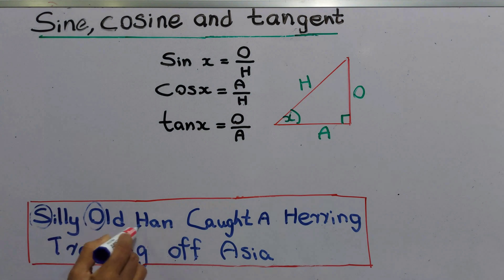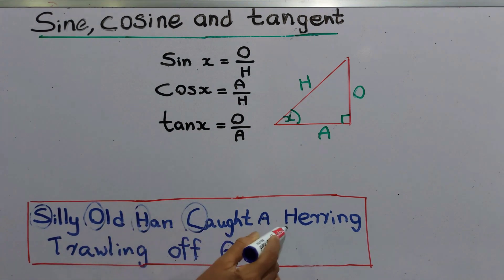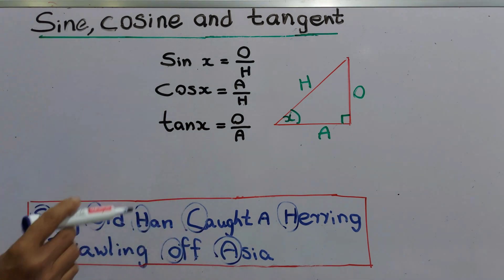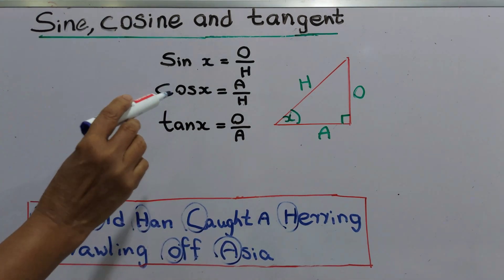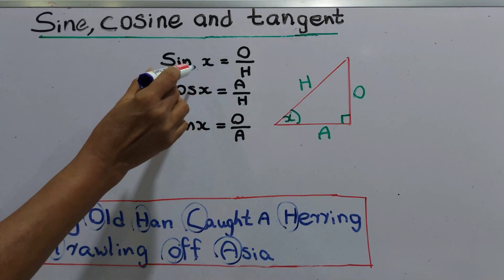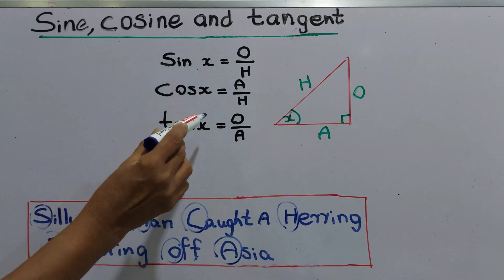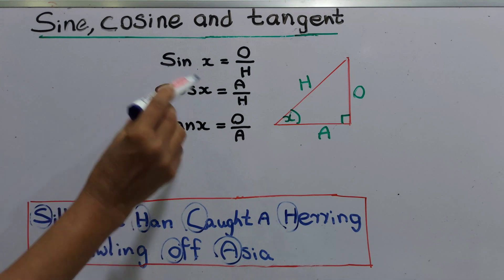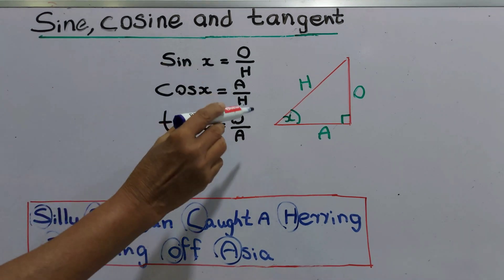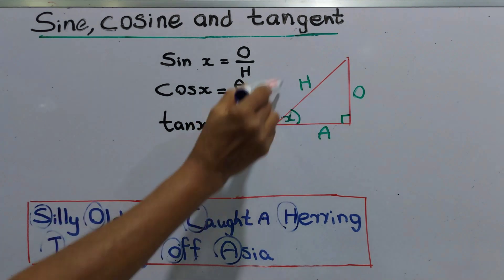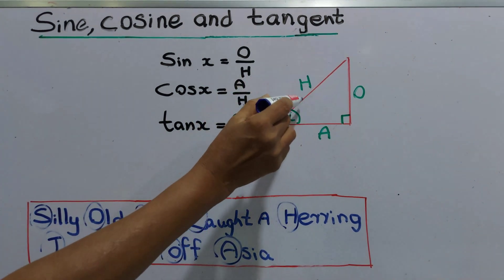That is very easy to keep in mind. For any angle, the values for sine x, cos x, and tan x can be found using a calculator or tables. It is very important to keep the letters in order, and if you keep this simple sentence in mind, it is very easy to apply these functions.